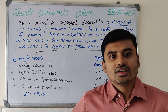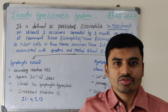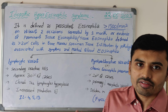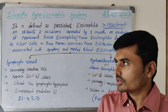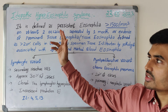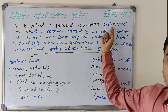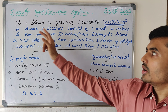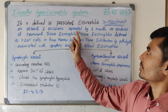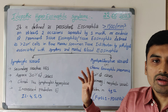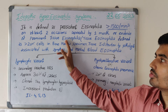Hello everyone, let's learn about idiopathic hypereosinophilic syndrome. It is defined as persistent eosinophilia of more than 1500 per cubic millimeter on at least 2 occasions, separated by 1 month, or evidence of prominent tissue eosinophilia.